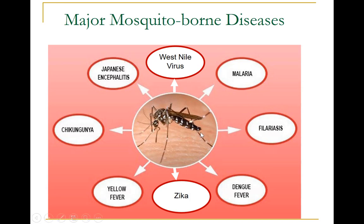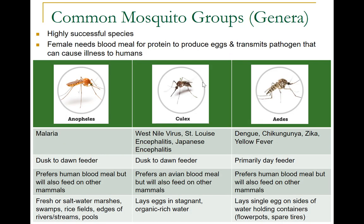Since mosquitoes are so dominant in spreading diseases to humans, here you can see some of the major mosquito-borne diseases: Western Nile virus, malaria, filariasis, dengue fever, Zika virus, yellow fever, chikungunya, and Japanese encephalitis. These are the major mosquito-borne diseases also presented in the previous table. We continue by introducing the three different mosquitoes: Anopheles, Culex, and Aedes.